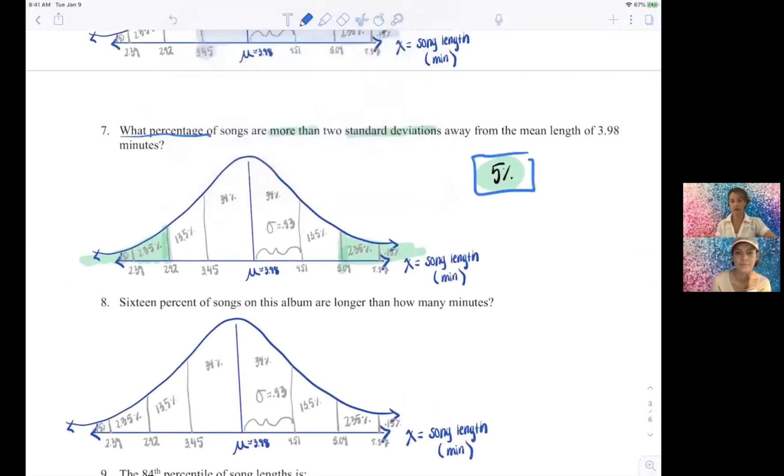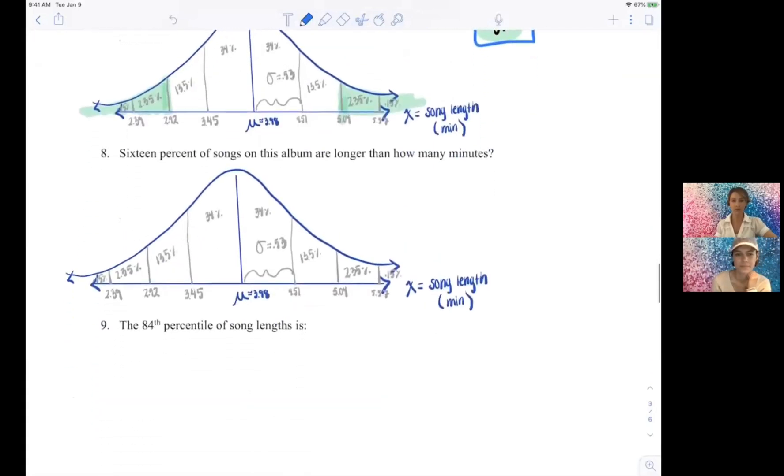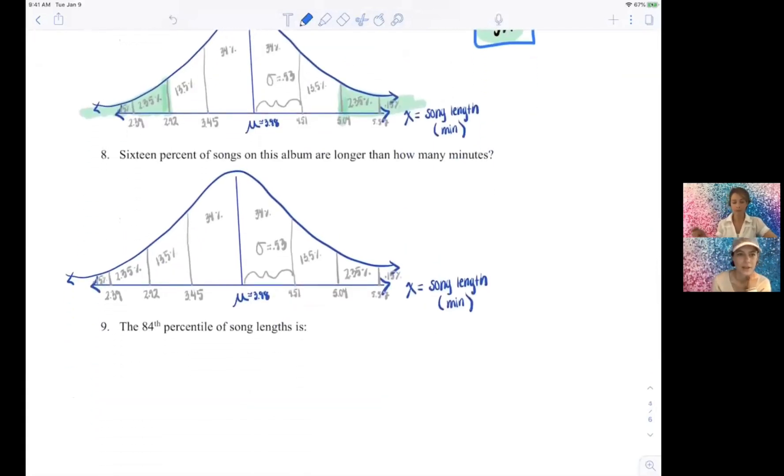So that was another what percent, so we gave our answer as a percentage. But now things get switched up just a little bit. Okay, so this is 16 percent of songs on this album are longer than how many minutes. So what are we actually trying to find this time if we're given the area, the percentage, what do we want to find? So ultimately we're trying to find an x-value here, right.